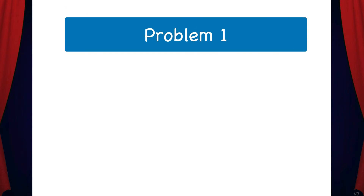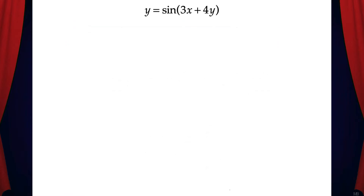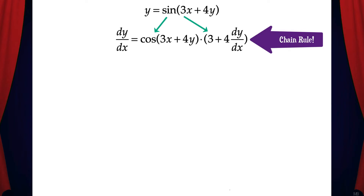Problem 1. Suppose we need to find dy/dx for this given equation: y equals sine of 3x plus 4y. Let's take the derivative of each term from left to right. The derivative of y is dy/dx. The derivative of sine(3x + 4y) is cosine(3x + 4y) times the derivative of the inside part,